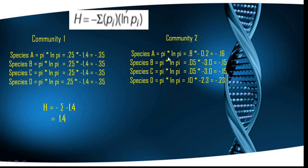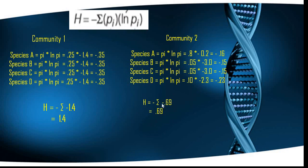For Community 2, species A: pi = 0.80, ln(pi) = −0.22, giving pi × ln(pi) = −0.16. Species B: pi = 0.05, ln(pi) = −3.0, giving −0.15. Species C and D yield similar small values. Summing all four gives approximately −0.69. Multiplying by minus one gives H ≈ 0.69 for Community 2.